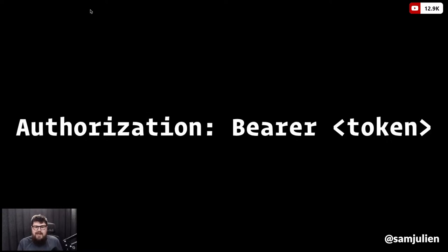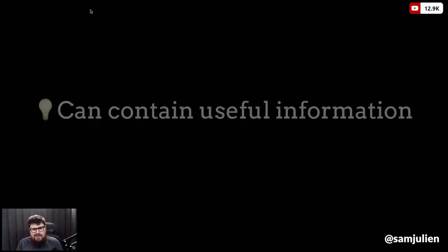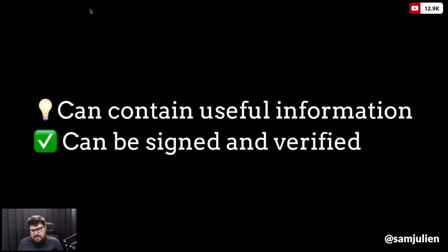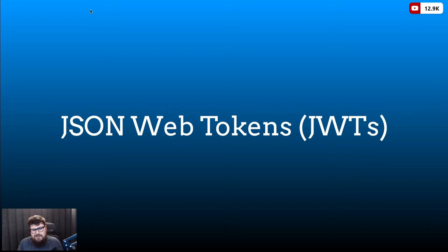You've probably seen an access token before — it comes as an authorization header with the word 'bearer' followed by a string of letters and numbers all jumbled together. That jumbled string is the token. We said we need this artifact to contain useful information and be signed and verified. It turns out there's a really convenient format that does this: called a JSON Web Token, or JWT. You might hear them pronounced as 'JWT.' JSON web tokens aren't required by specification for access tokens, but they are a very convenient format and you'll see them very commonly used.